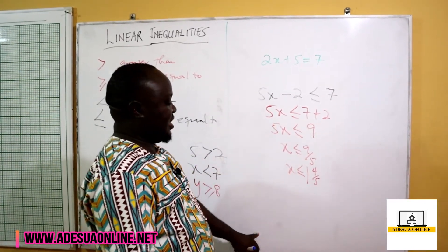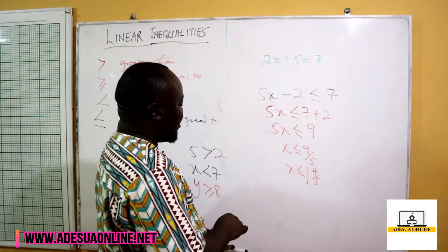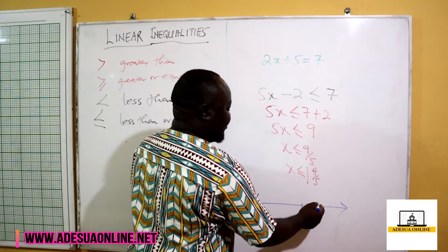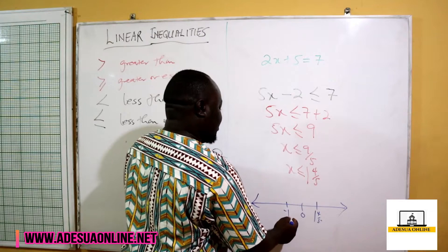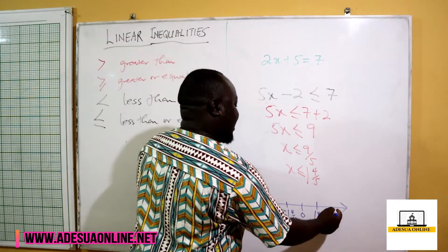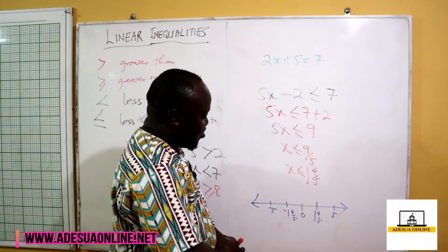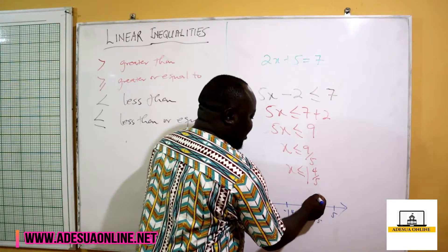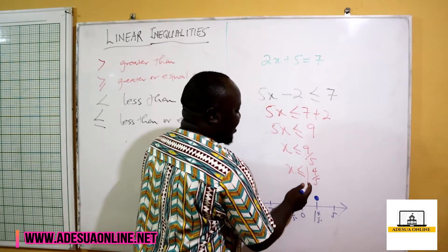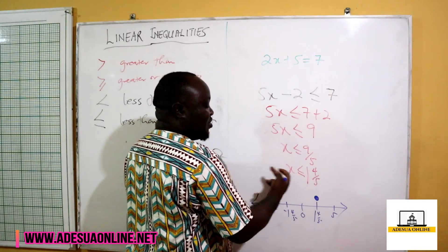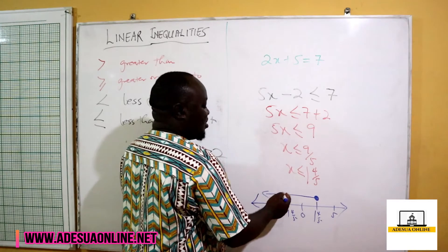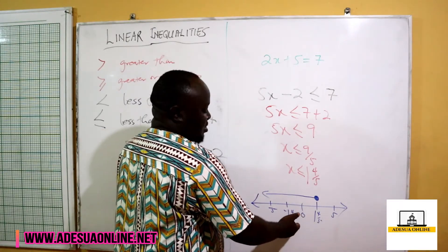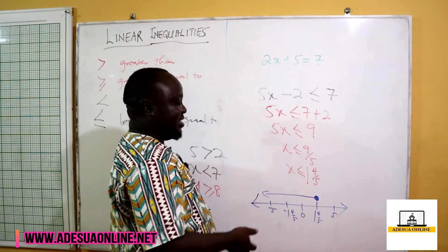Now if we have this inequality and we've been asked to represent this on the number line, we have our negative values, then our positive values, and we have 0. So I have positive 1 and 4 over 5, negative 1 and 4 over 5, and we can have negative 5 and positive 5. We are told that x is less than or equal to 1 and 4 over 5, so we are going to shade inside and indicate with an arrow going to the left, because numbers less than 1 and 4 over 5 include 0, negative 1 and 4 over 5, negative 5, negative 100, going to negative infinity.